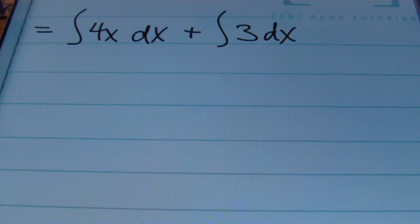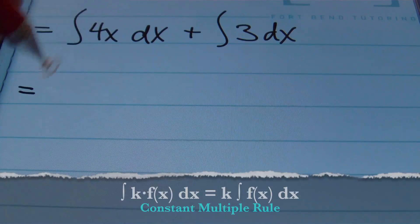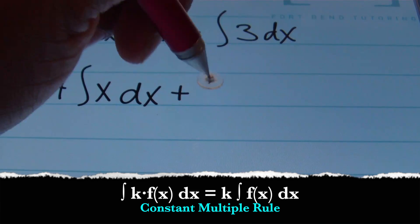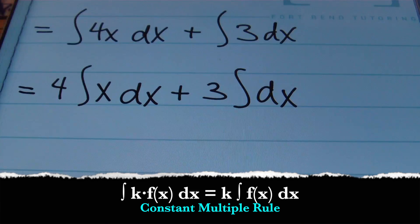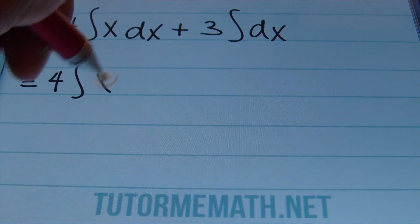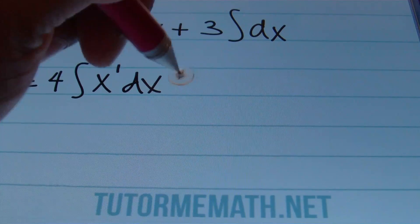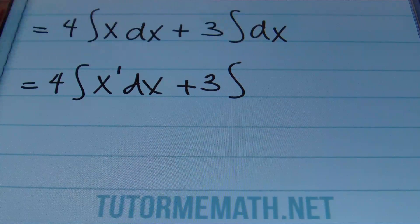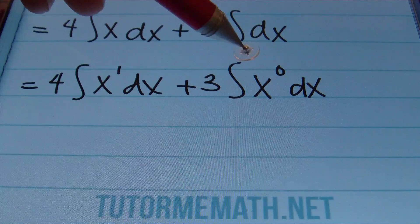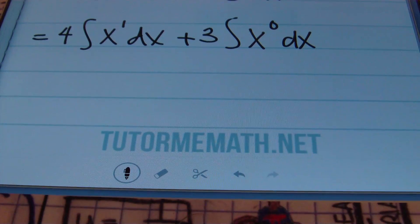The next step is to factor out the coefficient in each integrand. I'll rewrite this as 4 times the integral of x dx plus 3 times the integral of 1 dx. You need to know that x is to the first power, and technically you have x raised to the zero power — since x to the zero power equals 1, we can use this form to show how the power rule is being applied to that term.